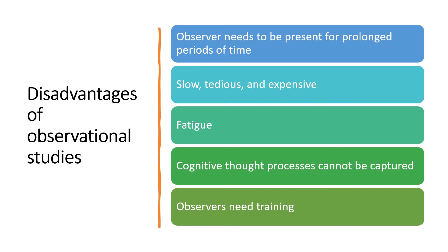To conduct observation as a research design, observers have to be trained in what and how to observe, and ways to avoid observer bias. There is a school of thought which argues that observation will definitely include bias, since the observer is human and humans are always influenced by their own biases. Make sure that before you engage in observation as a research design, you have participated in some kind of training or workshop which teaches you this specific skill.